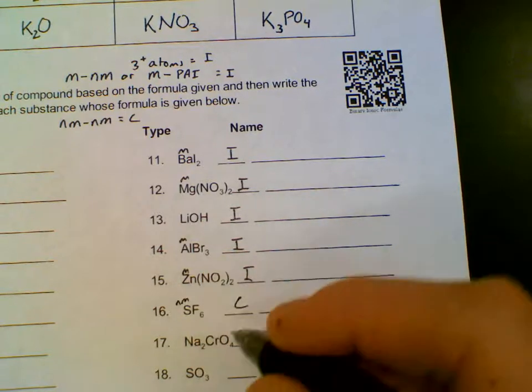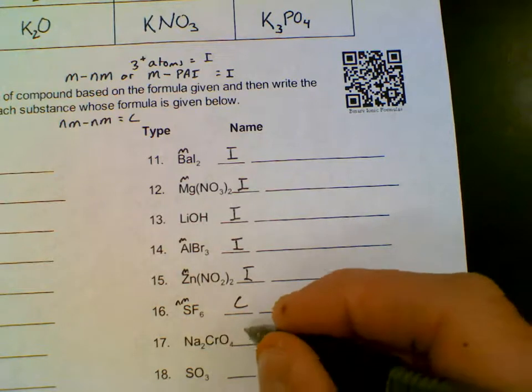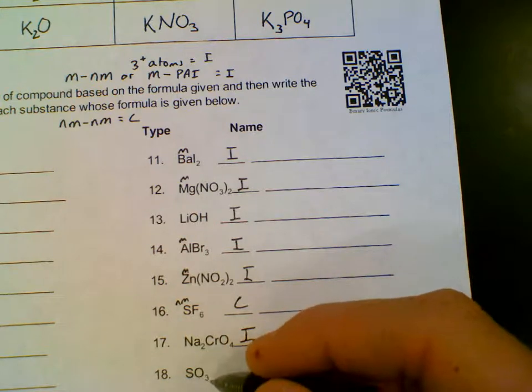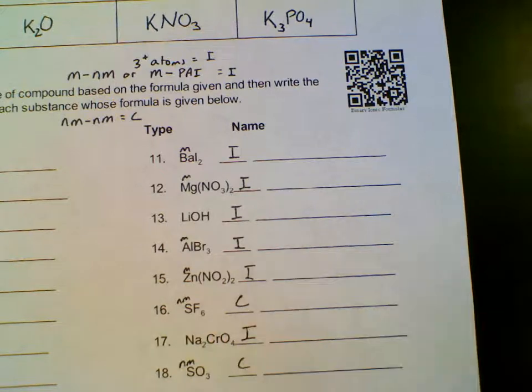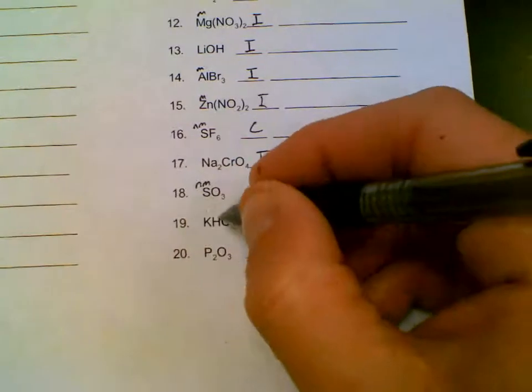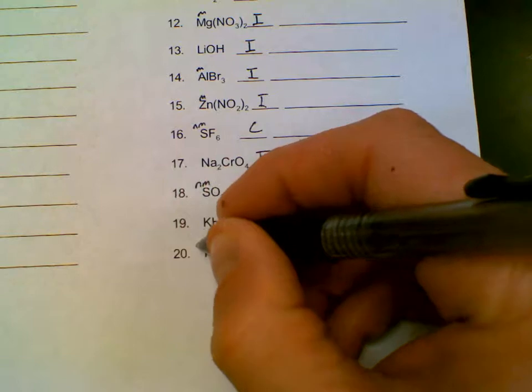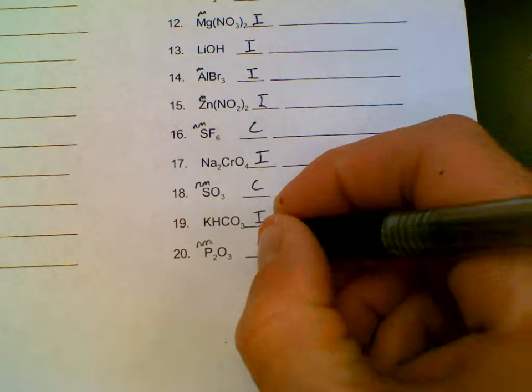Sodium is a metal, plus there's chromium and oxygen, makes three or more atoms, has to be ionic. Sulfur and oxygen, nonmetal to a nonmetal, covalent. Potassium is a metal, plus there's four total atoms, it's ionic. And then phosphorus is a nonmetal, which makes this covalent.